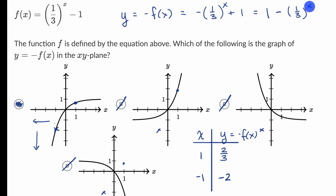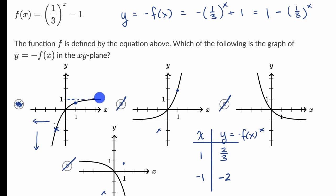And as x gets larger and larger and more positive, one-third to larger and larger positive exponents gets closer and closer to zero, so y approaches one as x gets larger. It looks like that is exactly what is happening with this graph — as x gets larger and larger, y is approaching one. So once again, we like choice A.